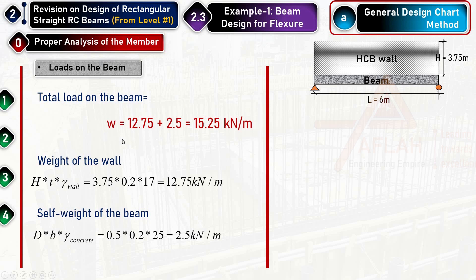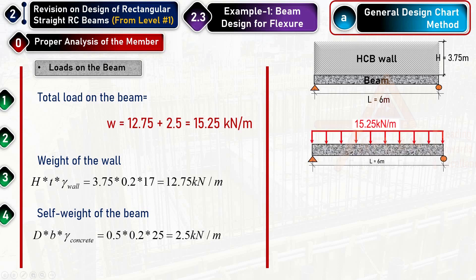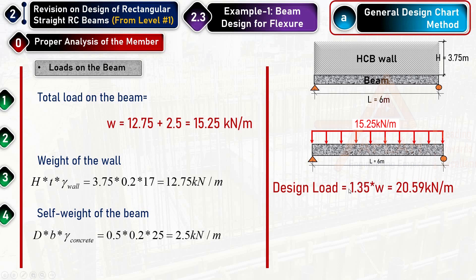To get the design (factored) load, since all loads are dead loads — superimposed dead load and self-weight dead load — we multiply by the dead load factor of 1.35. This gives a design load of approximately 20.59 kilonewton per meter.